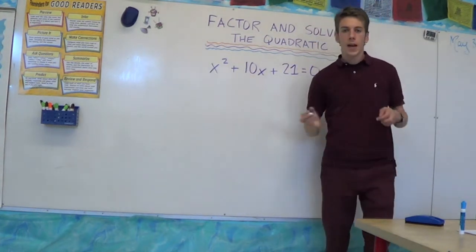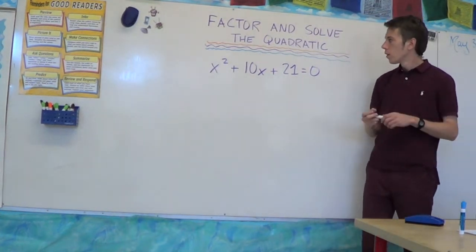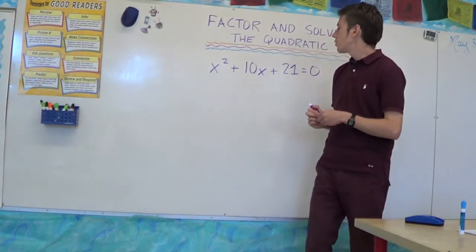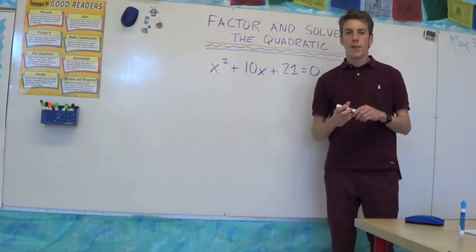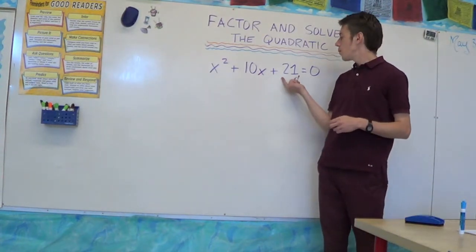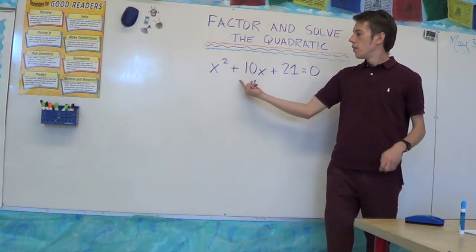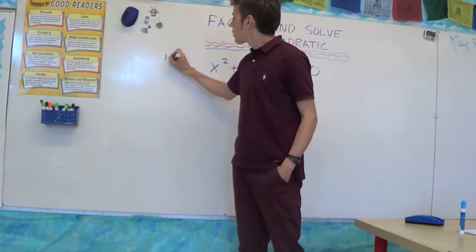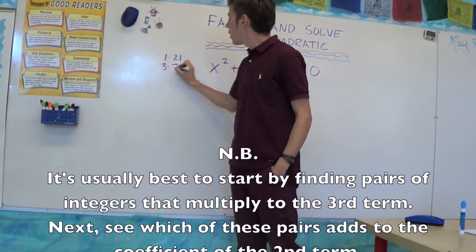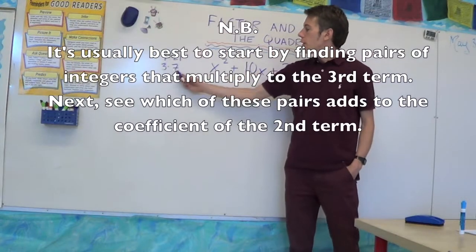Here we have a quadratic: x² + 10x + 21 = 0. It's going to have two solutions that we'll be able to find by factoring. So it's like a puzzle — we want to find two numbers that multiply to 21 and add to 10. Numbers that multiply to 21: we've got 1 × 21, or the only other pair is 3 and 7. Three times seven is 21 and three plus seven is ten.